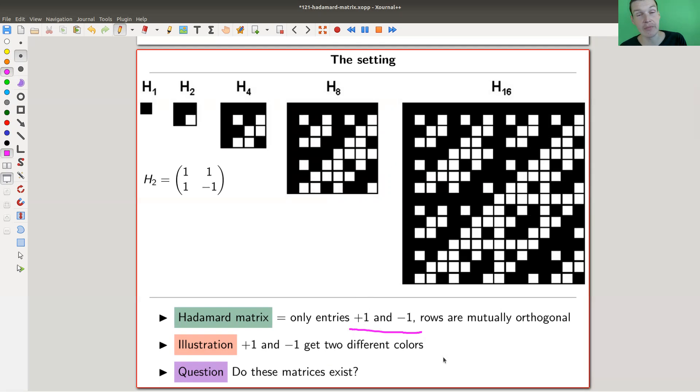It's very simple. I only have two entries, plus or minus one in my matrix. Instead of thinking about plus or minus one, I can just color them black and white. That's why you see in those pictures always black, white. It's really just a better notation for pluses or minus ones. And the condition I have is that the columns are orthogonal.